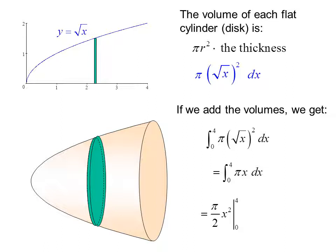Taking the antiderivative, we have pi over 2 x squared evaluated from 0 to 4 or 8 pi.